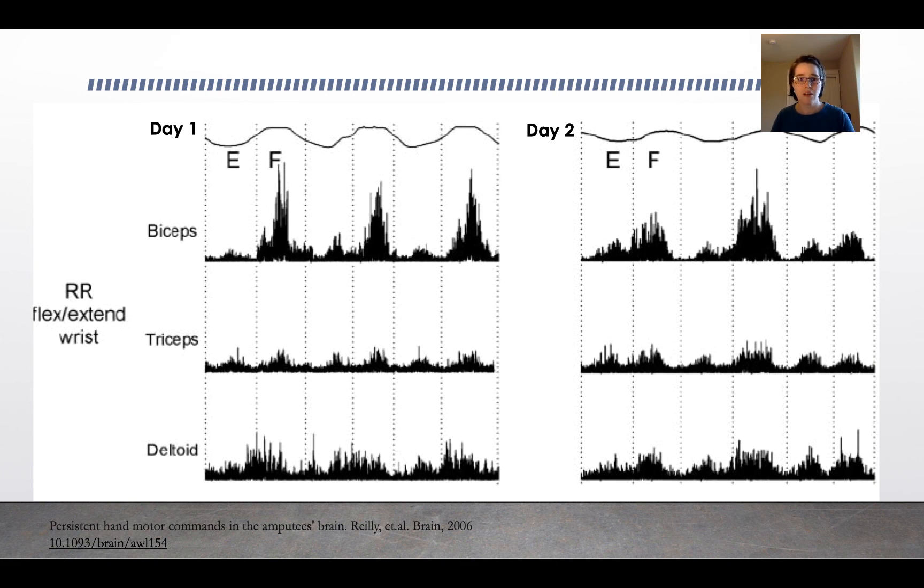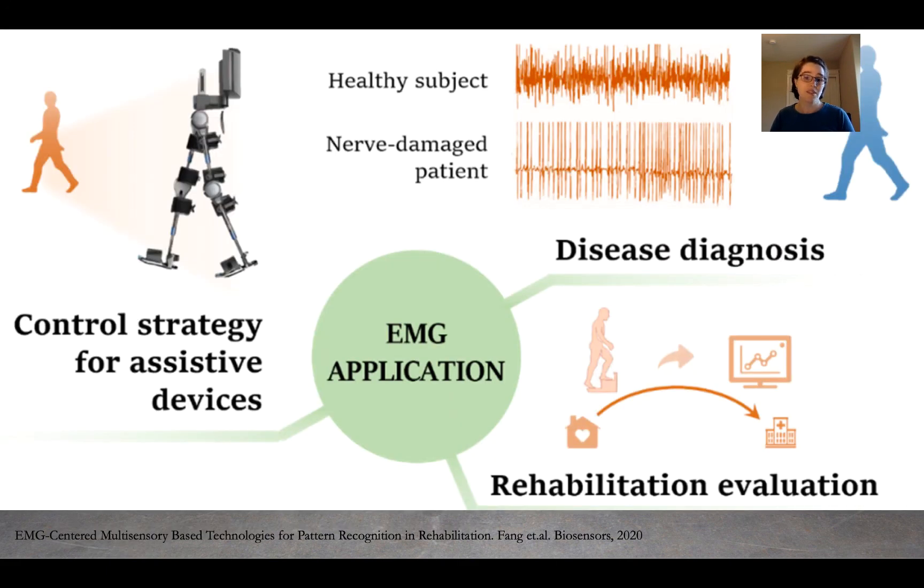So using EMG has a lot of challenges. That said, it has a lot of potential for applications as well. There's the potential for using it for rehabilitation analysis, for disease diagnosis, and also for assistive control and prosthetics. There are a lot of really cool things that you could do with EMG, but implementing it is still an open problem and an ongoing research process. So with that, I'll see you in the next video.